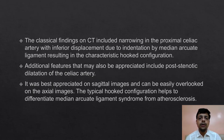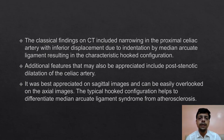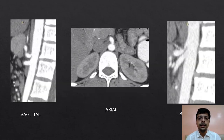The classical finding on CT included narrowing in the proximal celiac artery with inferior displacement due to indentation by the Median Arcuate Ligament, resulting in a characteristic hook configuration. An additional feature included post-stenotic dilatation of the celiac artery. This was best appreciated on sagittal images and can be easily overlooked on axial images. The typical hook configuration helps to differentiate Median Arcuate Ligament Syndrome from atherosclerosis. The sagittal and axial images of the patients screened showed the classical hooked appearance and post-stenotic dilatation of the celiac artery.